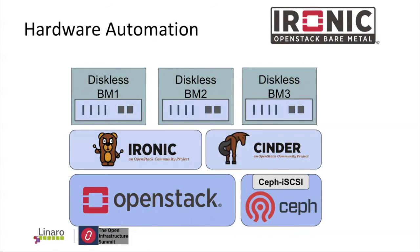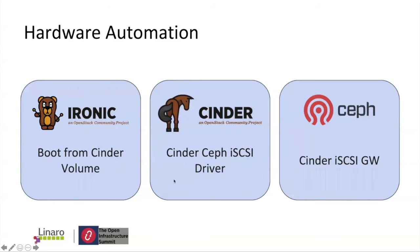The diskless boot idea leverages Ironic, Cinder, and Ceph iSCSI gateway support from the Ceph side to boot bare metal machines. The bare metal is a diskless BM — it should have a disk, but the disk is provided by the Ceph iSCSI gateway. There are three main components. First, in Ironic, it is a boot-from-Cinder-volume feature, which has been supported so we can leverage the API. Second, Cinder needs to support the Ceph iSCSI driver — we are working with upstream to land and merge this patch.